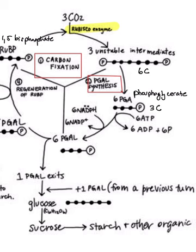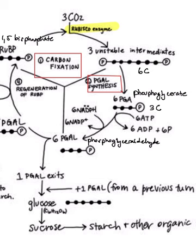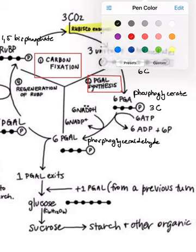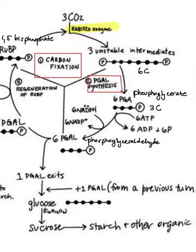Next, what we would need is a molecule of ATP to come in for each of these six PGAs to transform them into PGAL. So PGAL is a phosphoglyceraldehyde and we will see those six ATPs come in and leave as six ADP and six inorganic phosphates.